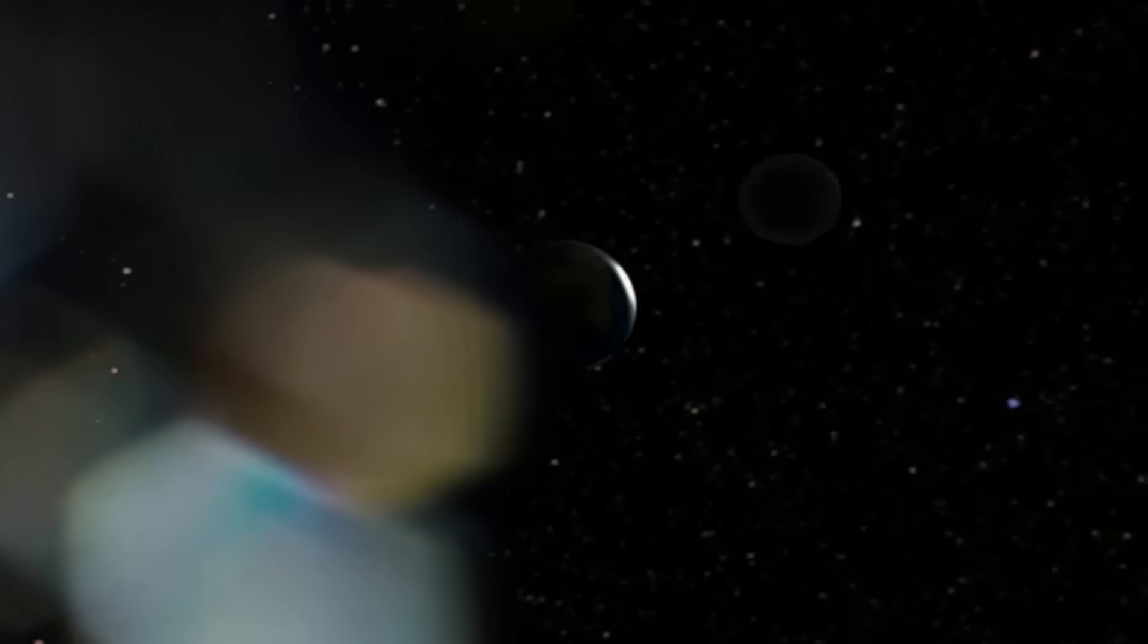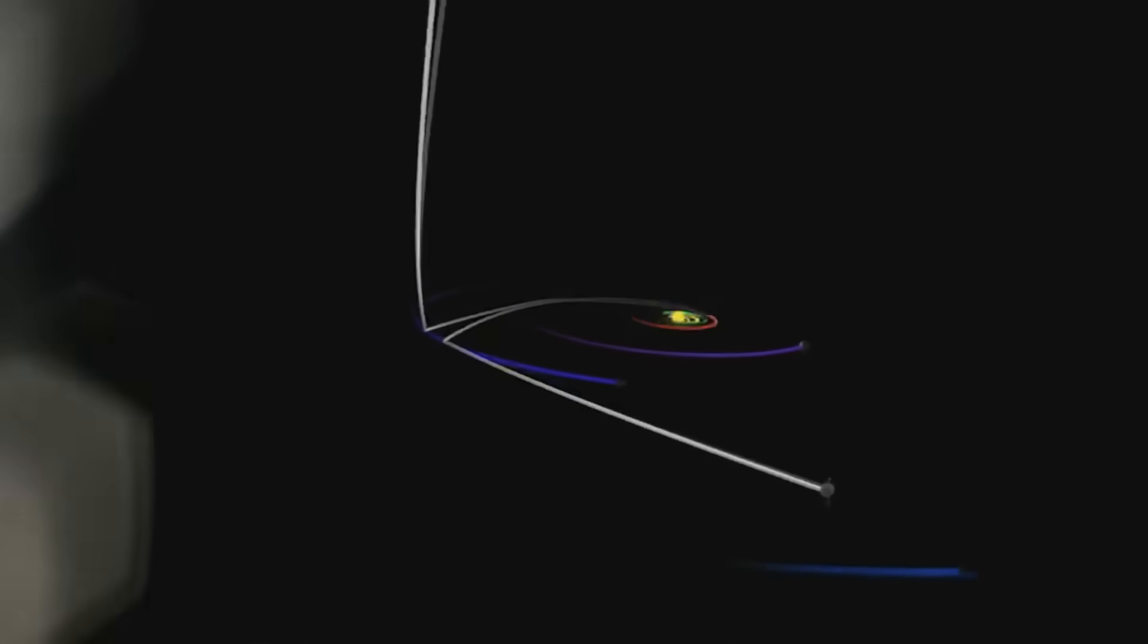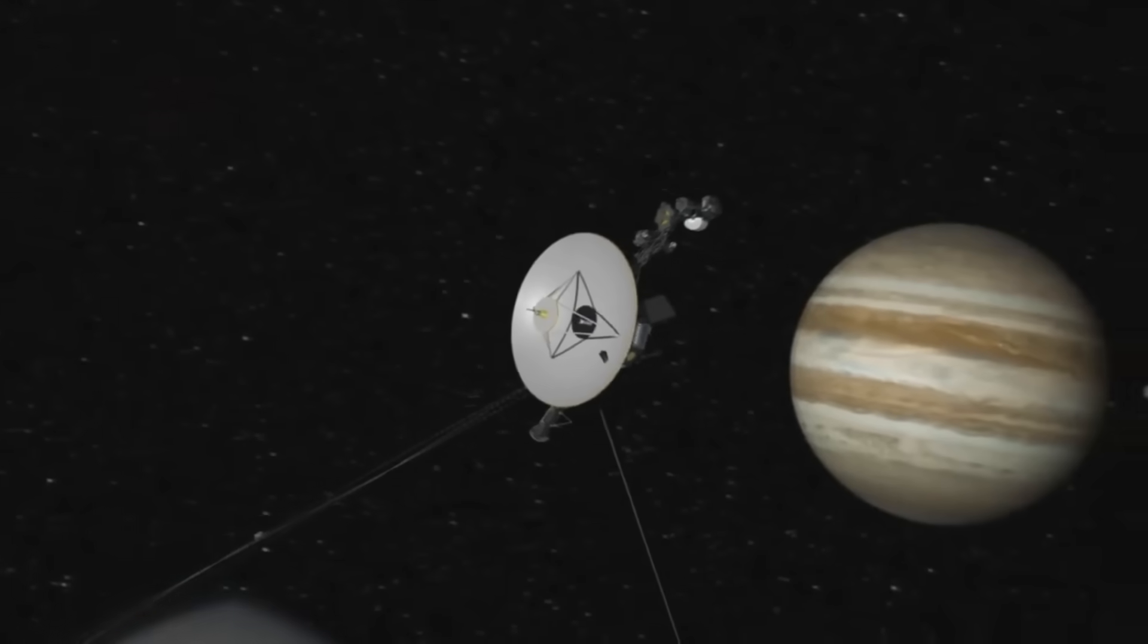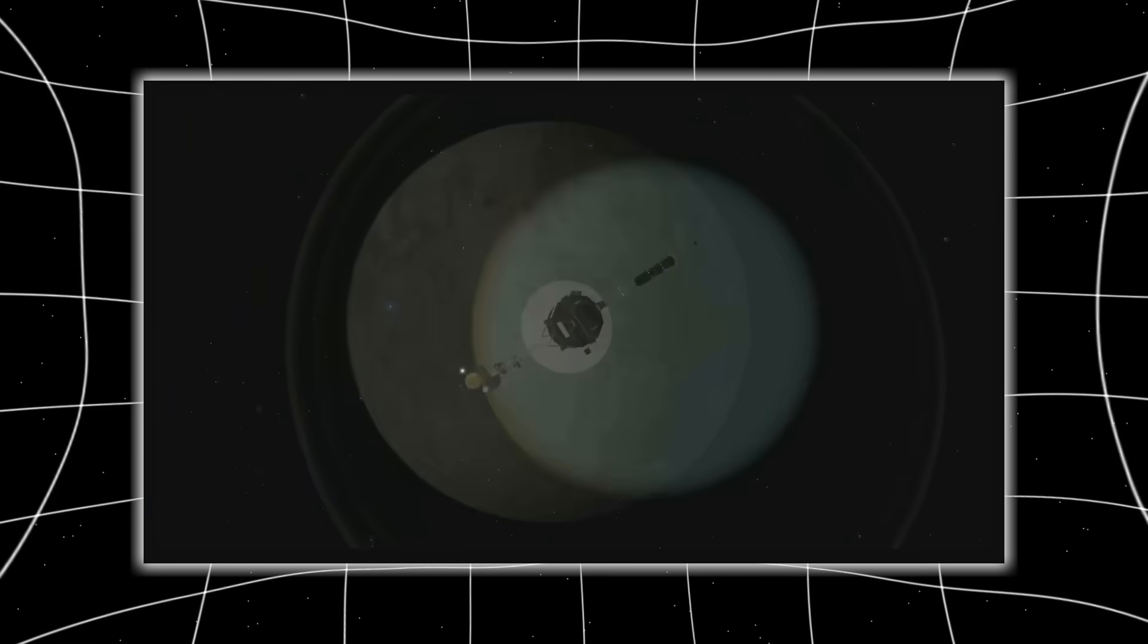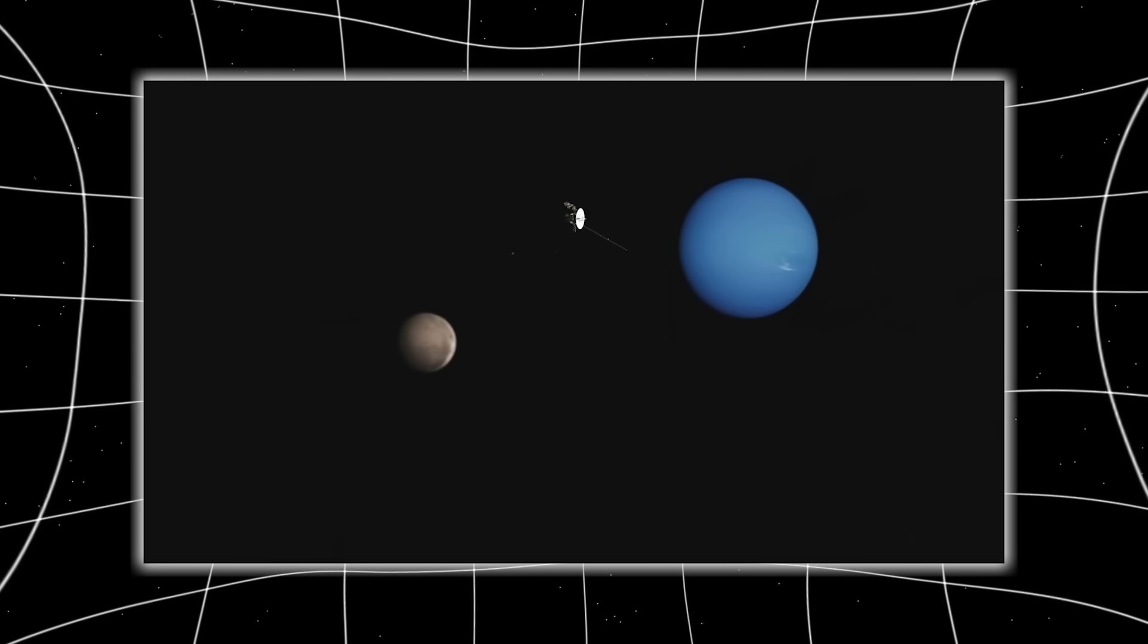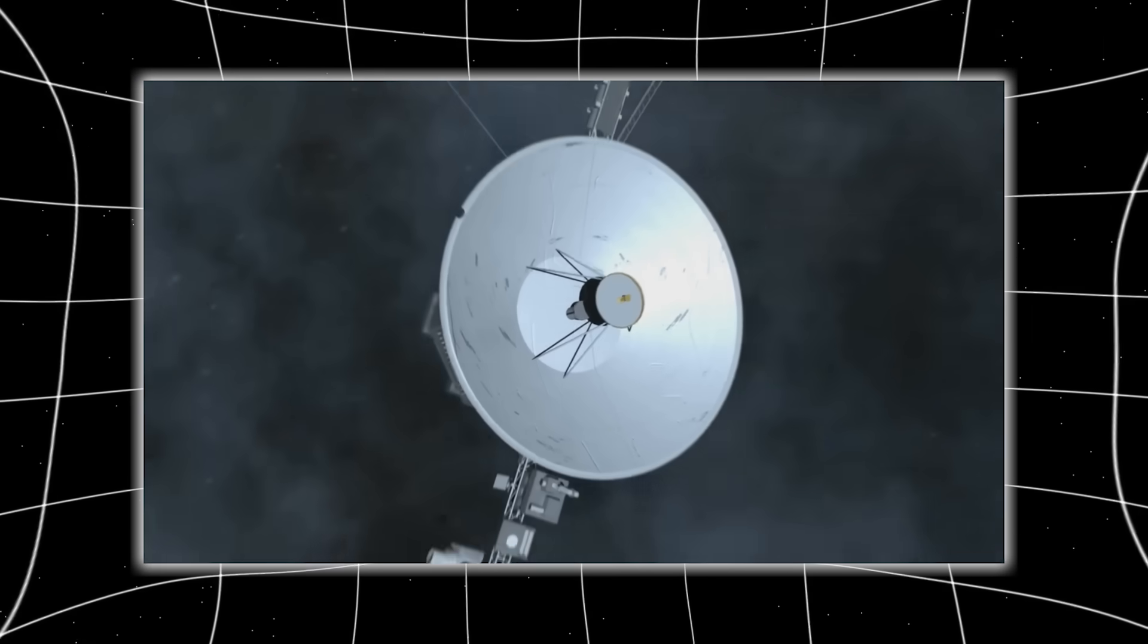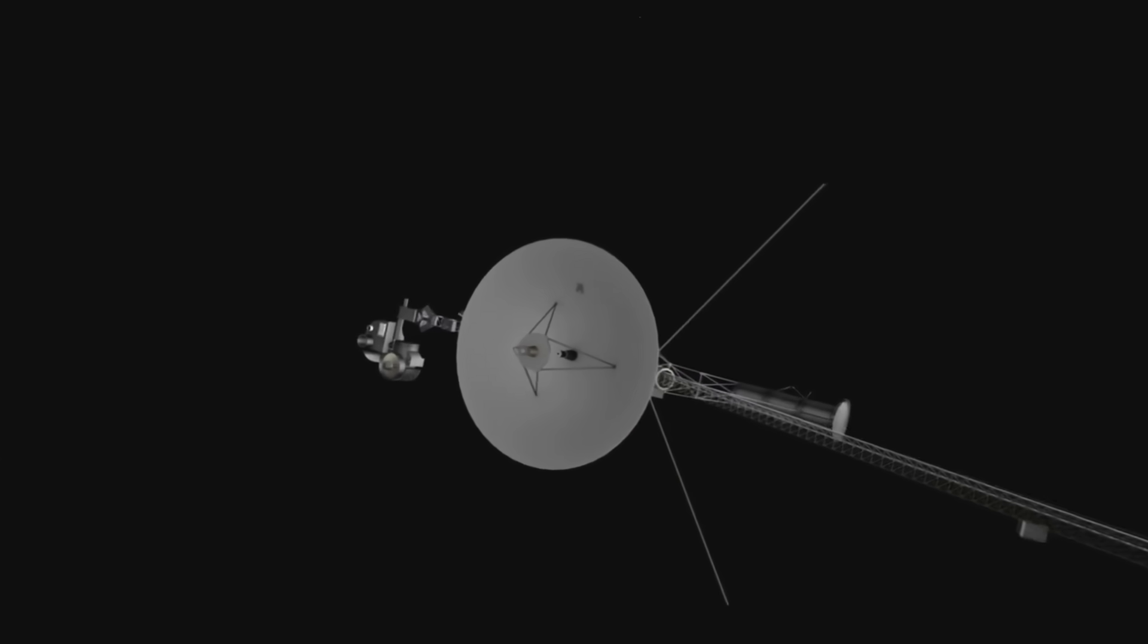During solar maximums, it expands, pushing the galactic environment away. During minimums, it contracts, exposing our system to more radiation. This dynamic behavior meant the boundary wasn't static. It was alive. And Voyager 2, approaching from a slightly different angle than Voyager 1, found that it crossed this frontier at a different distance, 121 AU instead of 119 AU. This discrepancy wasn't random. It revealed the boundary breathes, flexes, adapts. And that changes everything.